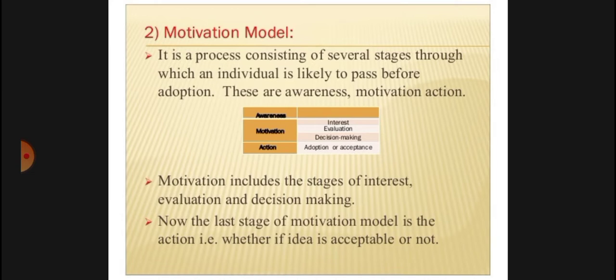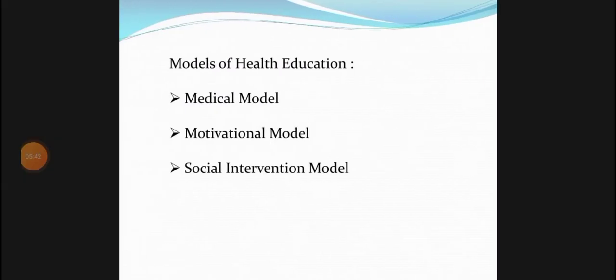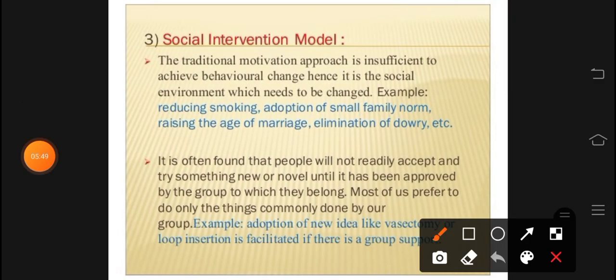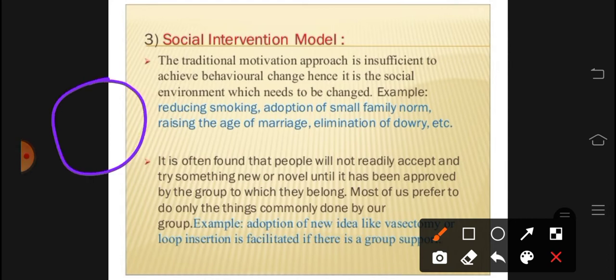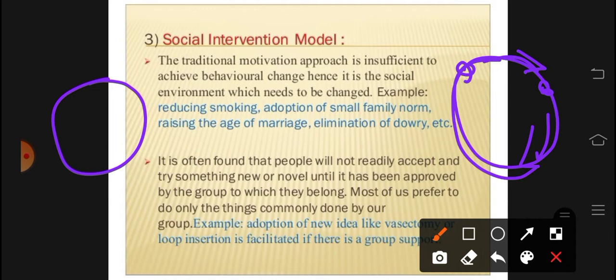The second is the motivational model. Then the social intervention model — the medical and motivational models operate at the individual level. In social intervention, we thought that at the individual level we would not change the whole society. Using social groups, positive or negative reinforcement, we improve the whole group and the whole society. For example, one person acts and other people get motivated. Examples include reducing smoking, adoption within families, age of marriage, population control, and elimination of dowry. This is the social intervention model.